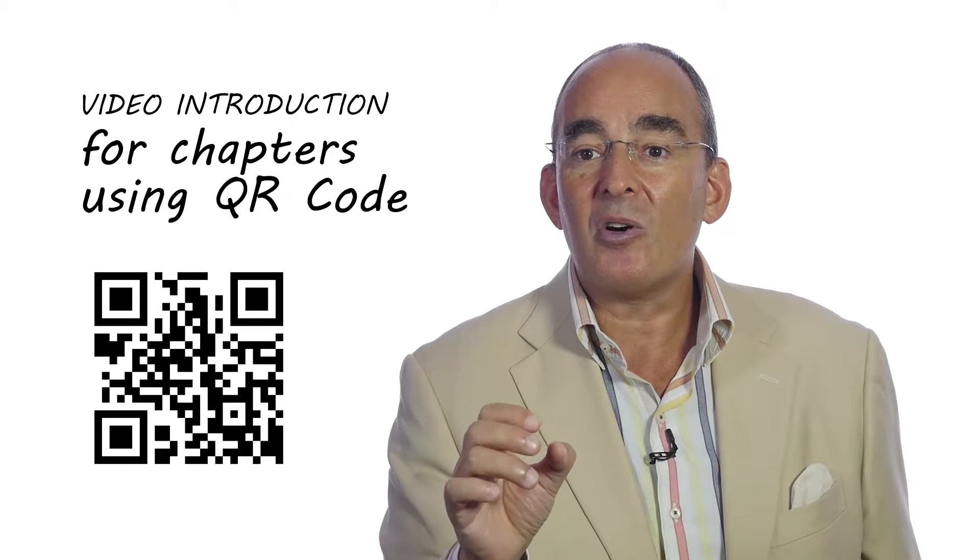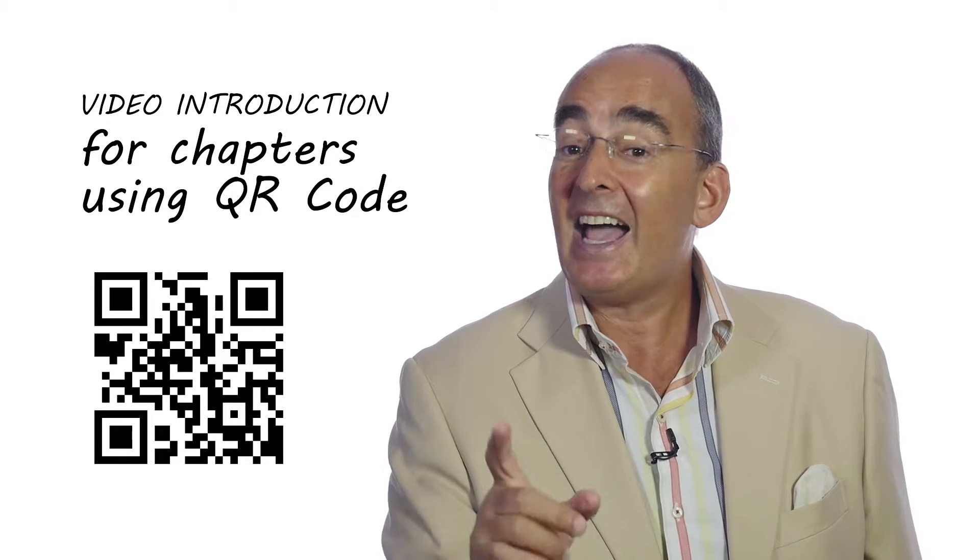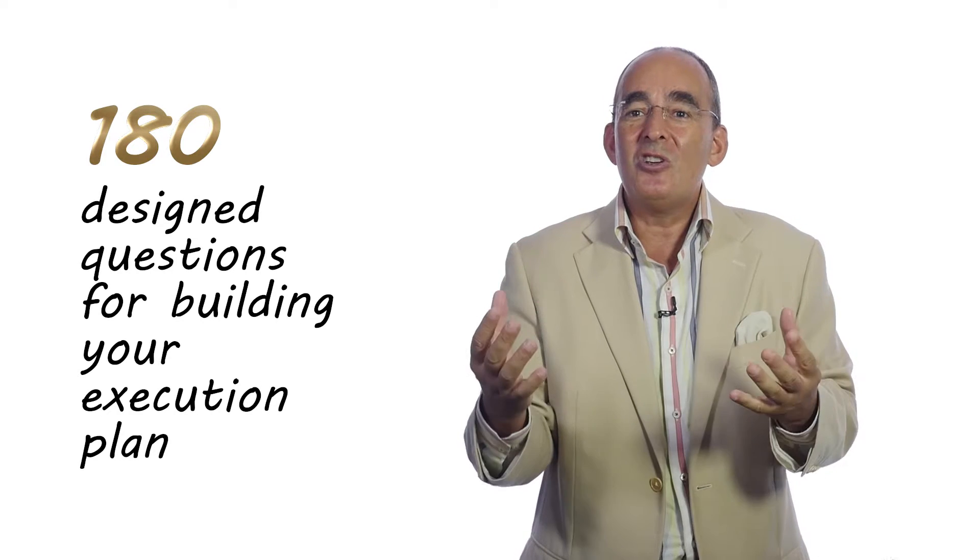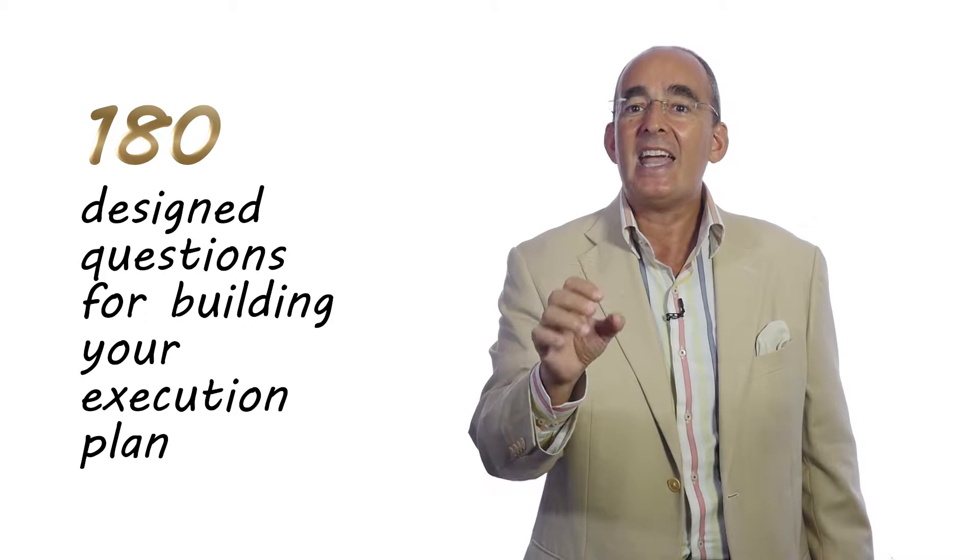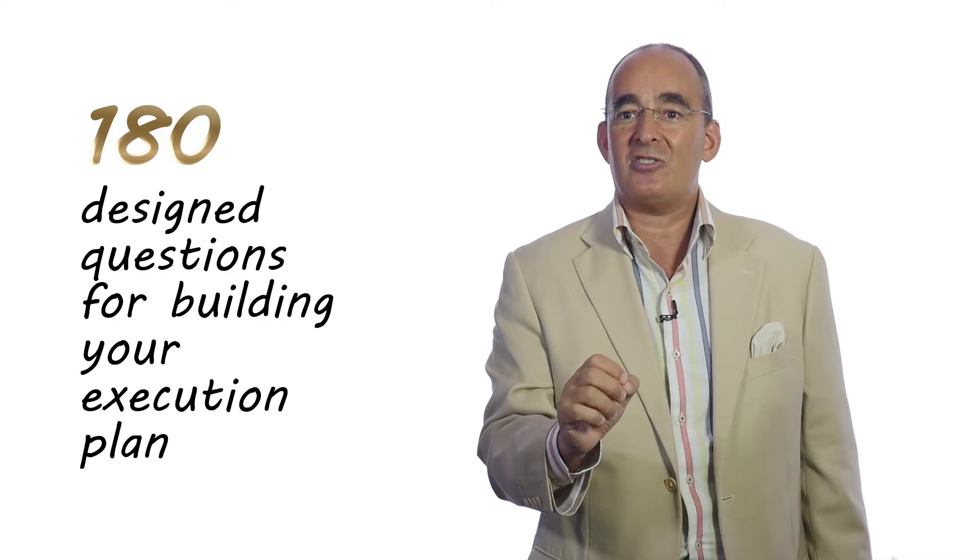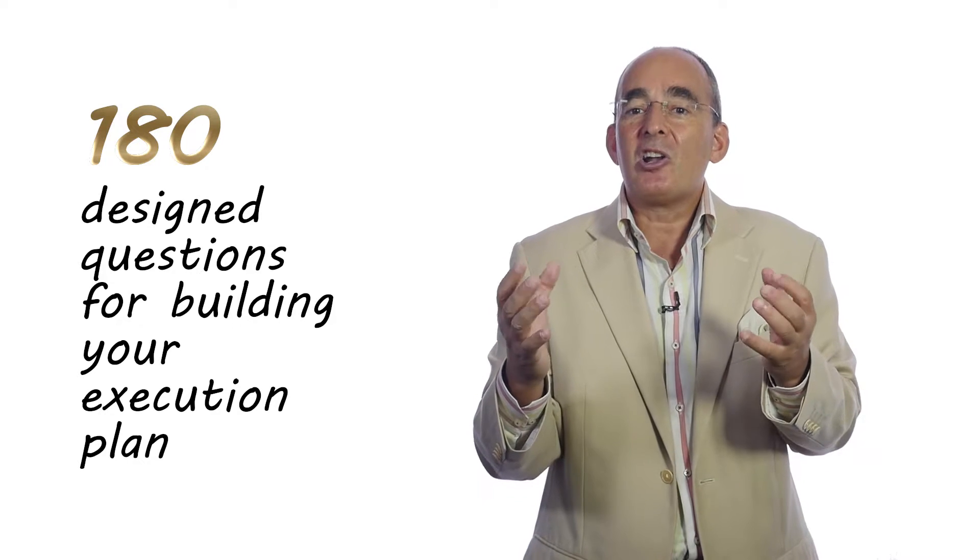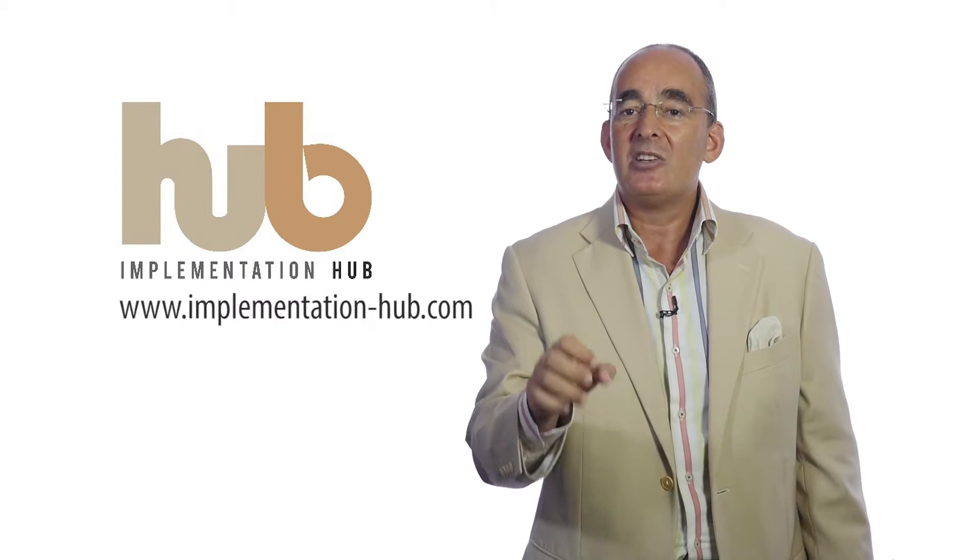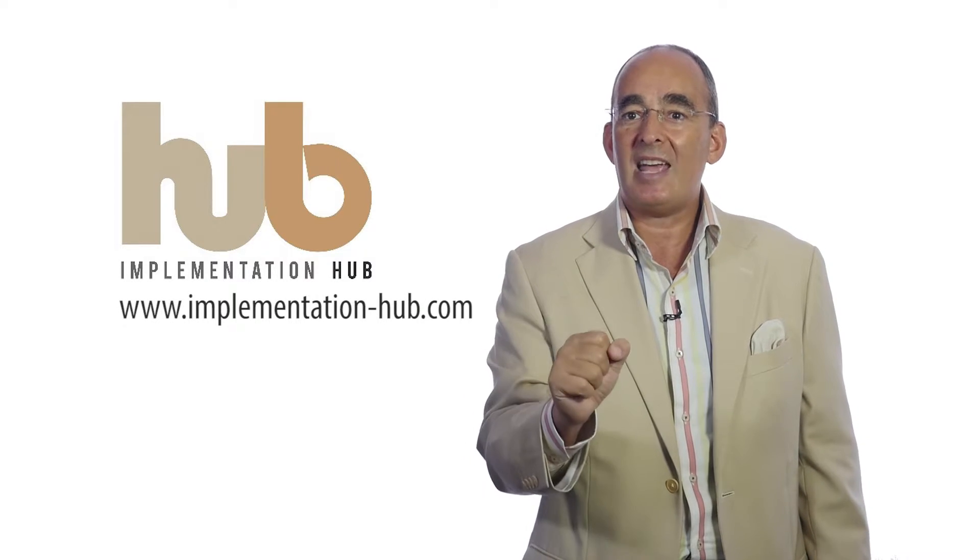Every chapter starts with a video that introduces what the chapter is about and gives you a question. There are 180 questions that you can use to create your own company execution plan after you've crafted your strategy. There are links provided in something called the Implementation Hub to download the tools and templates.